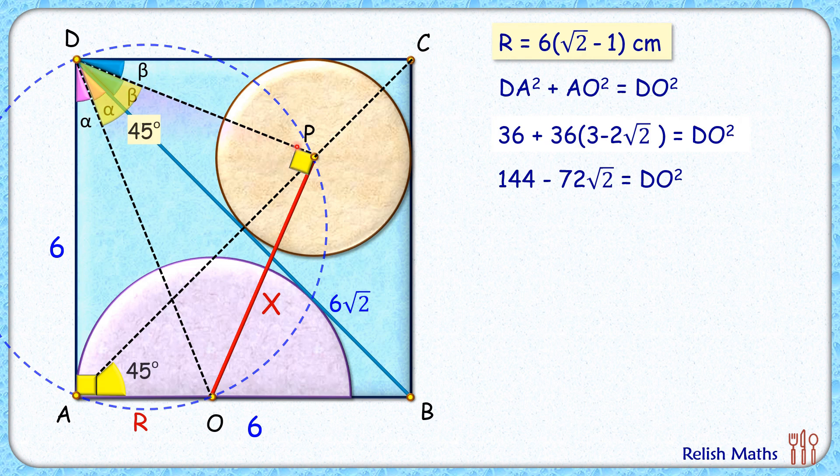So if we consider the triangle DPO, in this we have got a 45 degree angle and a 90 degree angle, and thus this remaining angle here will be 45 degrees. So it's basically an isosceles right angle triangle, as OP length is x centimeters.